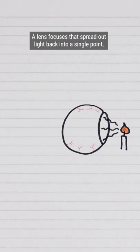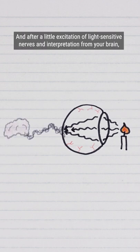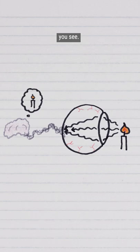A lens focuses that spread-out light back into a single point, corralling it into a crisp image on your retina. And after a little excitation of light-sensitive nerves and interpretation from your brain, you see. But wait,